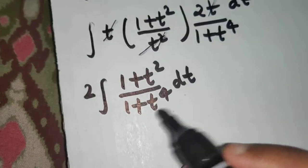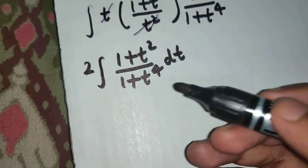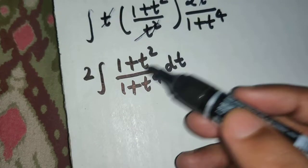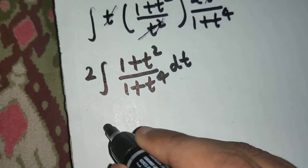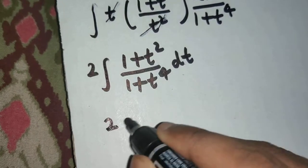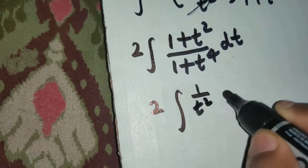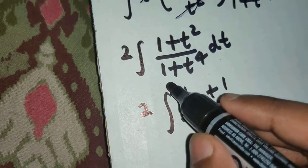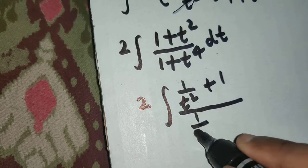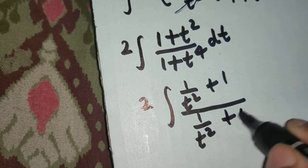Whenever you come across this on practice, you'll realize it is always better to divide each term in the numerator and denominator by t². Once you do so, you get (1/t² + 1) divided by (1/t² + t²).